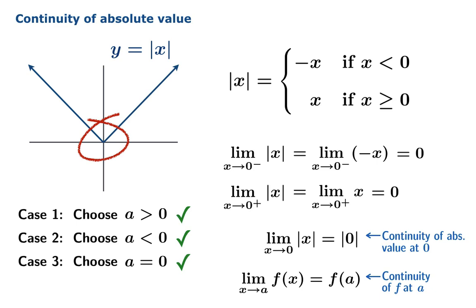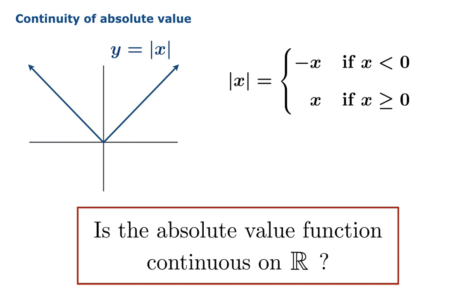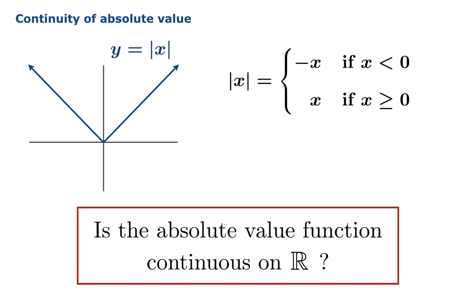So where does that put us? No matter what kind of argument we plug in — positive, negative, or zero — the absolute value function is continuous at that argument. In other words, the absolute value function is continuous on ℝ.